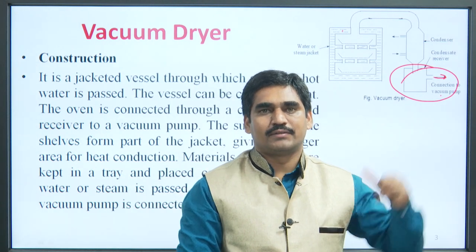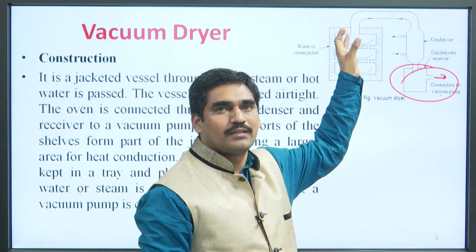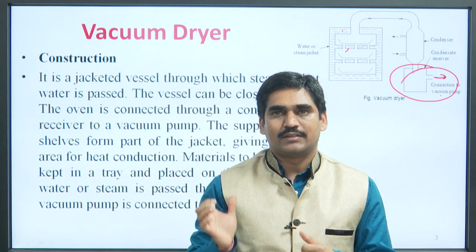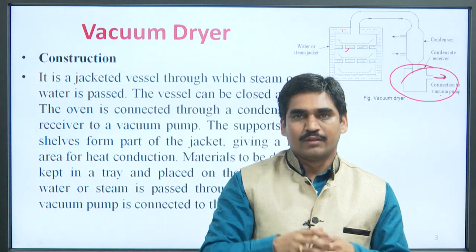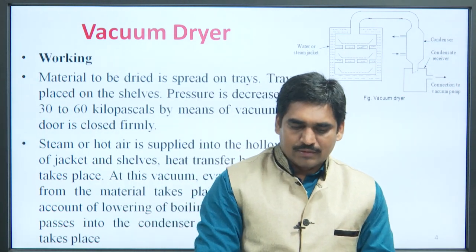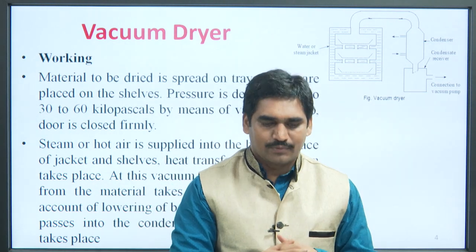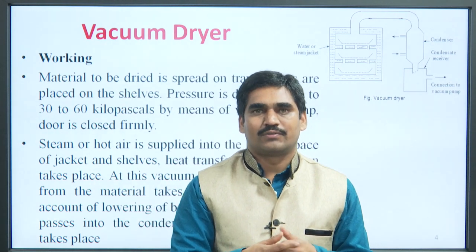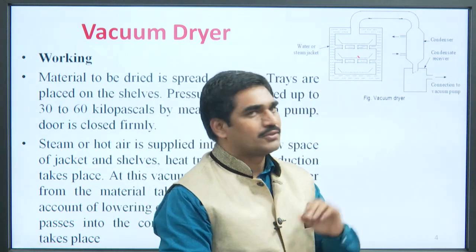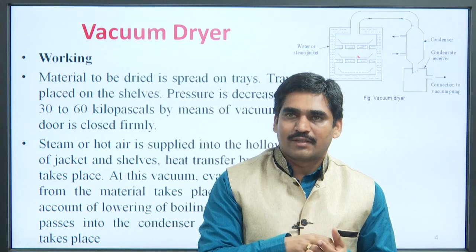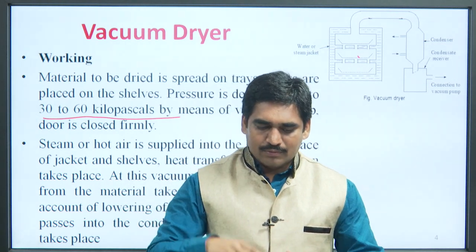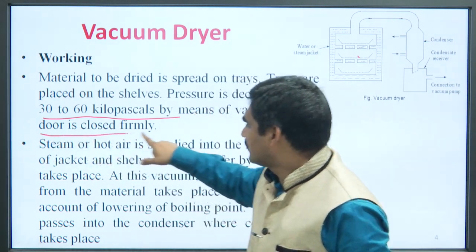Materials which are to be dried are kept on the trays. After placing them on the cells, hot water or steam is passed into the jacket, and vacuum is created with the vacuum pump. Moving on to the working of vacuum dryer — first, the material which is to be dried is kept on the trays and placed in the vacuum dryer. Then pressure is applied up to 30 to 60 kilo Pascal by means of the vacuum pump, and the door is closed firmly.